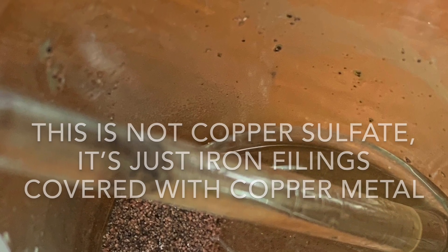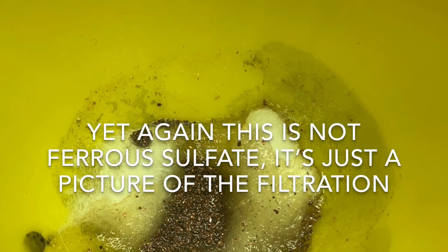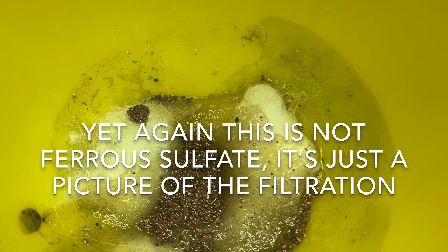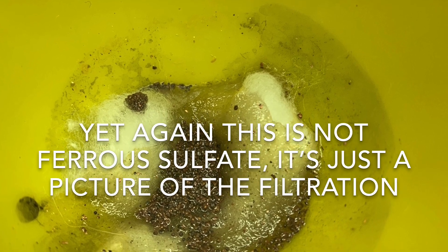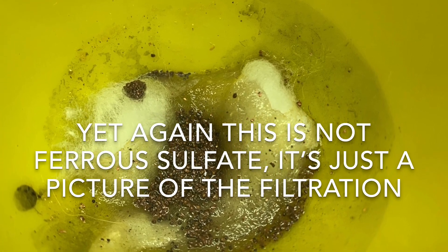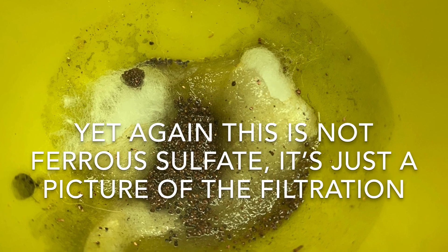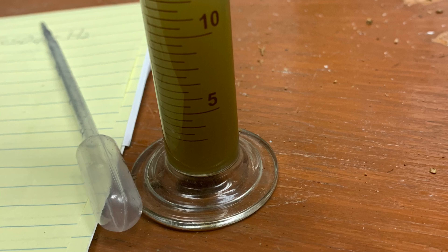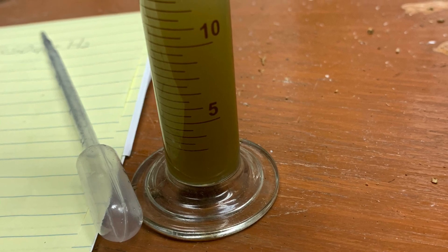Then I added one gram of iron filings to this beaker, and what this did was exchange the sulfate anion to the iron, which is already oxidized to the plus two state, forming iron two sulfate, and the copper from the copper sulfate liberated as a metal.